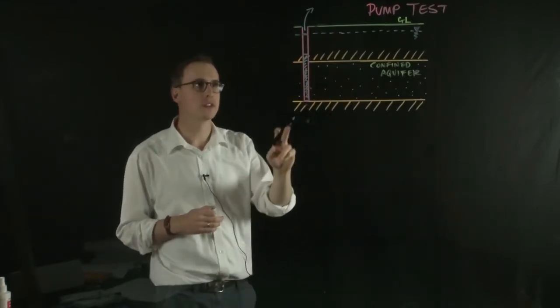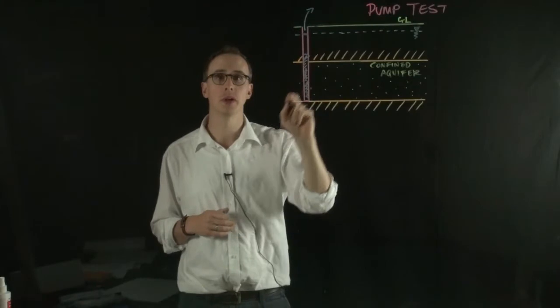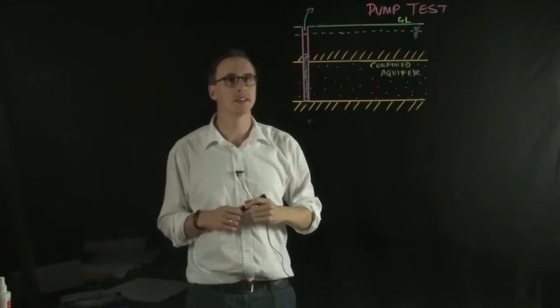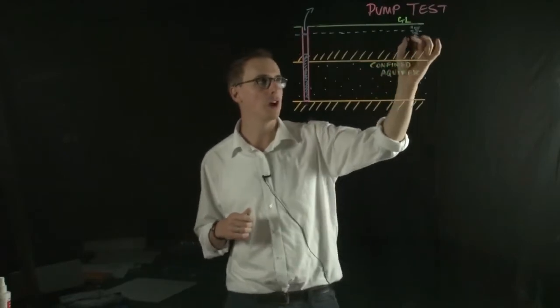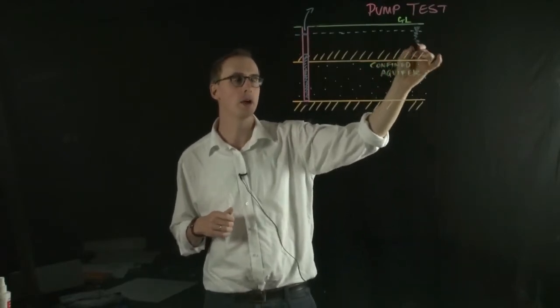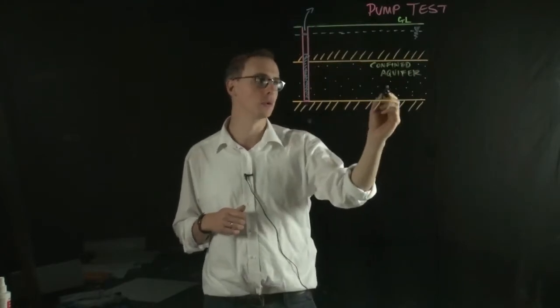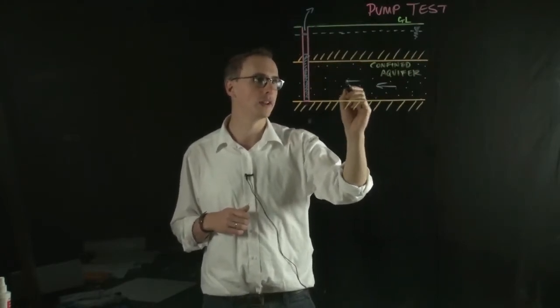And in a confined aquifer situation, this water level must be above the top of the aquifer. What will happen is that we have a driving force where we have a higher water level over here and a low water level over here. So water will move through the confined aquifer.